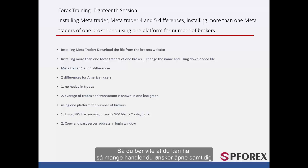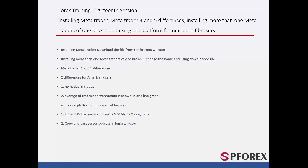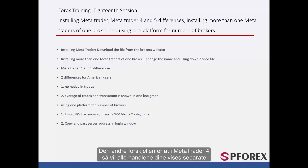You can have any number of trades that you like, but they all have to be in the same direction — that is, either all selling trades or all buying trades. The second difference is that in MetaTrader 4 each of your trades is shown separately, while in MetaTrader 5 all of your trades are shown together based on the amount of transaction.